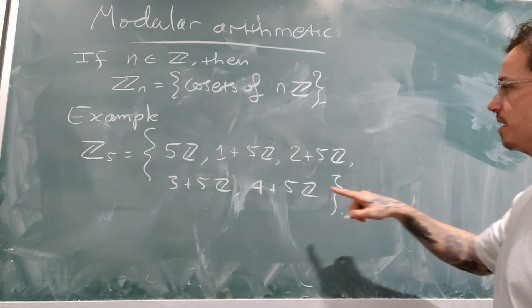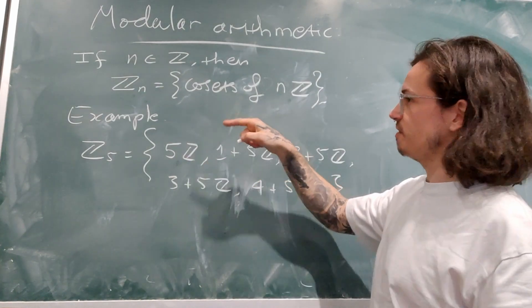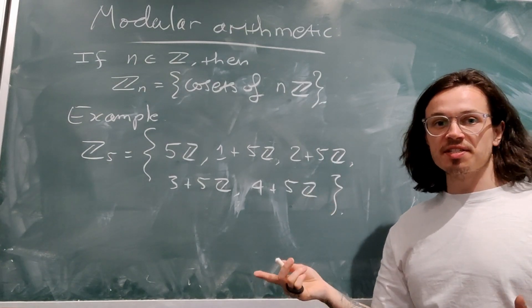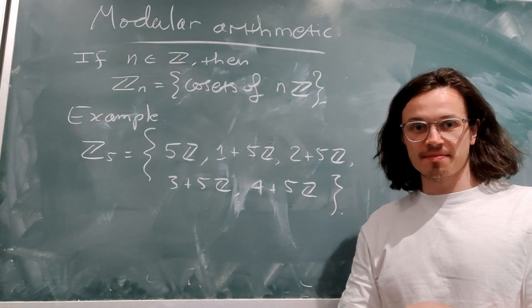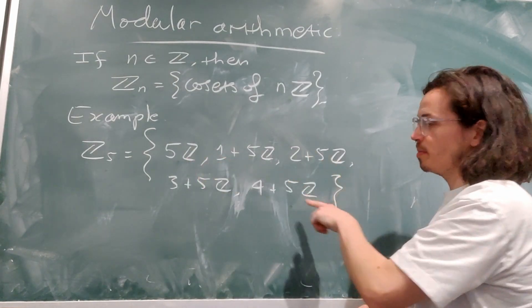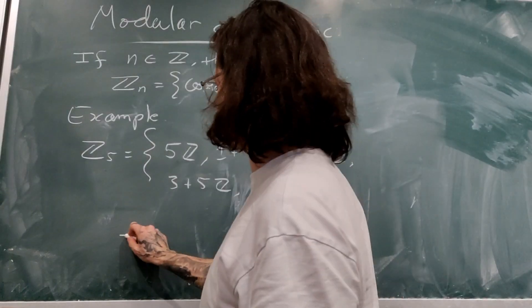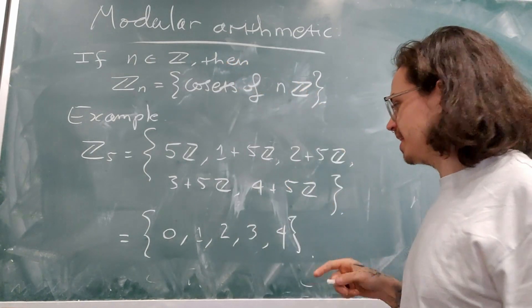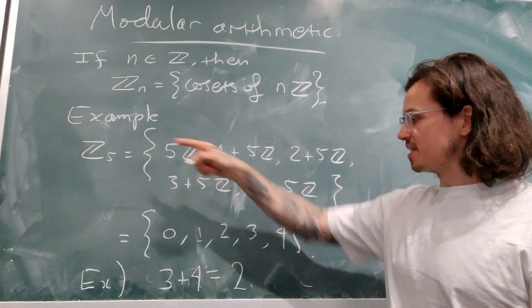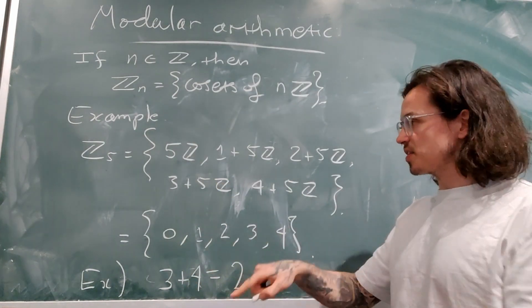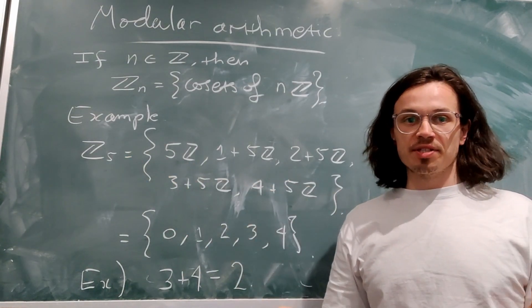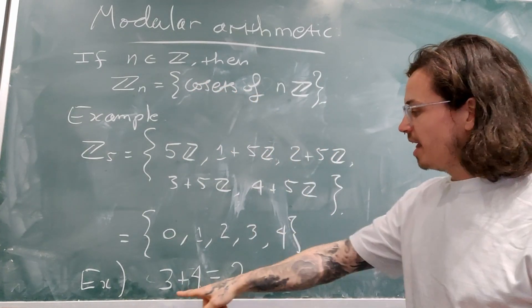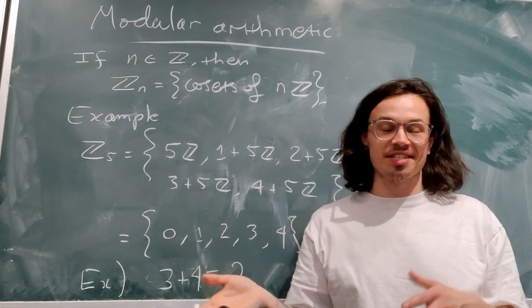For example, if we consider the subgroup 5Z, then we have the coset 2+5Z, which just corresponds to the number 2, and then plus or minus all multiples of 5. So we get 2, 7, 12, 17, and then we also have -3, -8, etc. Z_5 is equal to the set consisting of the cosets 5Z, 1+5Z, 2+5Z, 3+5Z, 4+5Z. Since the 5Z is common amongst all of them, it's superfluous notation, so we may as well leave it out.